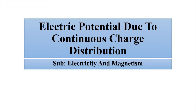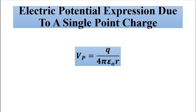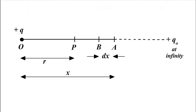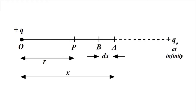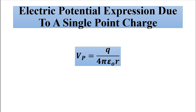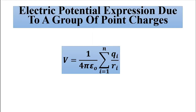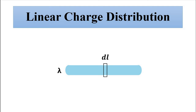We know that electric potential due to a single point charge is given by q by 4 pi epsilon 0 r, where we have a source charge present at a particular point and we have to find out the electric potential at any point P. We have also discussed electric potential because of a group of point charges. Now we will discuss the same for a continuous charge distribution.